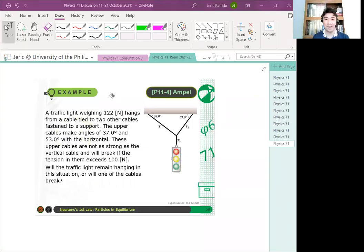Here's our final question, ampel. Do you know what ampel is? Ampel is the German word for stoplight. A traffic light weighing 122 newtons hangs from a cable tied to two other cables fastened to a support. The upper cables make angles of 37 degrees and 53 degrees with the horizontal. These upper cables are not as strong as the vertical cable and will break if the tension in them exceeds 100 newtons. Will the traffic light remain hanging in this situation or will one of the cables break?